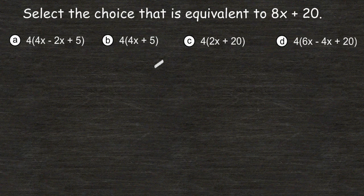For this problem, we have to select the choice that is equivalent to 8x + 20. We have four choices here that we have to manipulate to figure out which one equals 8x + 20.